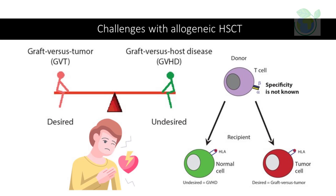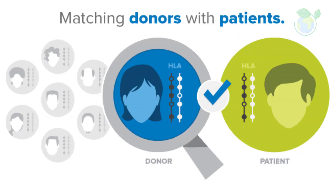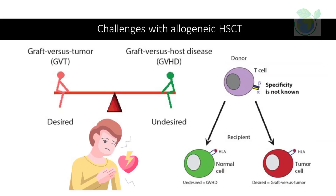Allogeneic hematopoietic stem cell transplantation, HSCT, is currently the only curative treatment for many blood genetic disorders such as sickle cell anemia and thalassemia. However, this treatment is limited by the availability of suitable donors — typically a sibling — who has a compatible blood type and human leukocyte antigen match. The lack of suitable donors can significantly delay treatment and in some cases may make it impossible. Another major limitation of allogeneic HSCT is the risk of graft rejection and graft-versus-host disease, GVHD. Graft rejection occurs when the recipient's immune system recognizes the donor cells as foreign and attacks them, while GVHD occurs when the donor's immune cells attack the recipient's healthy cells. Both of these complications can cause serious health problems and even death.